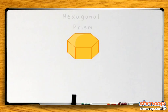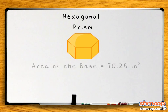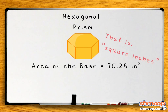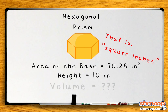The tool is a hexagonal prism. If the area of the base is 70.25 inches squared, and it has a height of 10 inches, what is the volume?